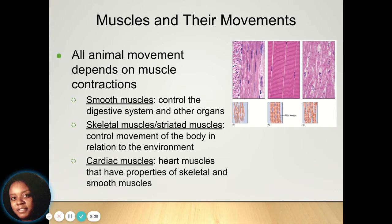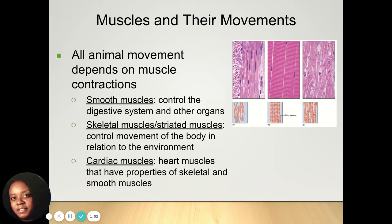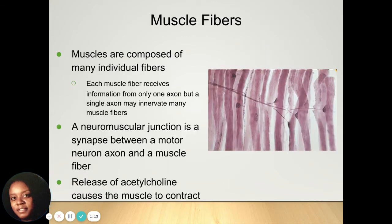Your muscles are fibers that exist in your body. All animals have movement depending on muscle contractions. You have smooth muscles, skeletal muscles — also called striated muscles — and cardiac muscles. Your smooth muscles control your digestive system and other organs. Your skeletal or striated muscles control the movement of your body in relation to the environment, and your cardiac muscles control your heart.